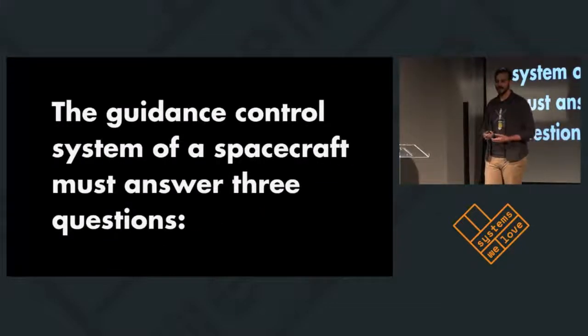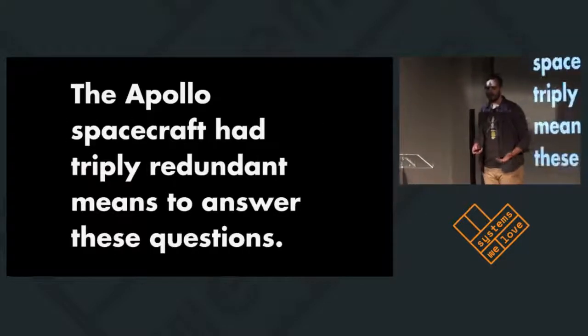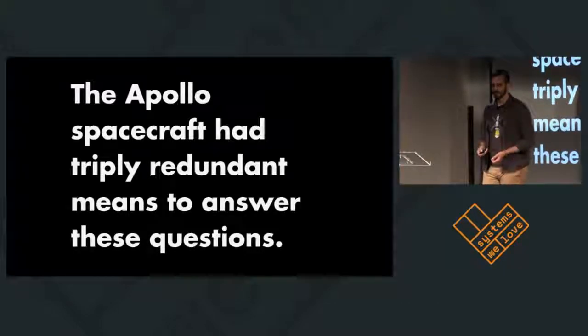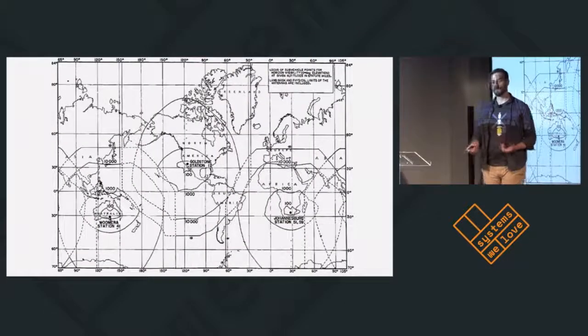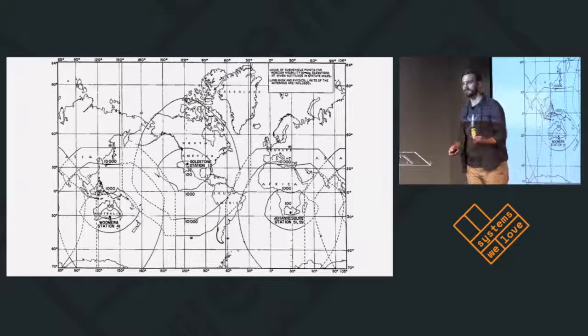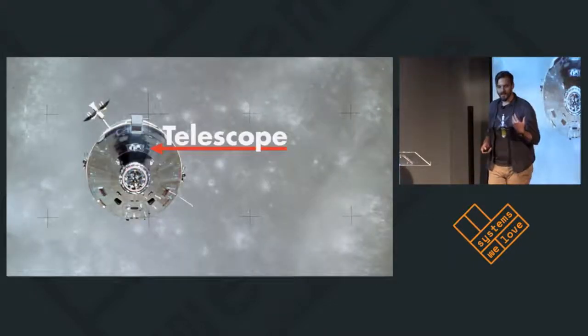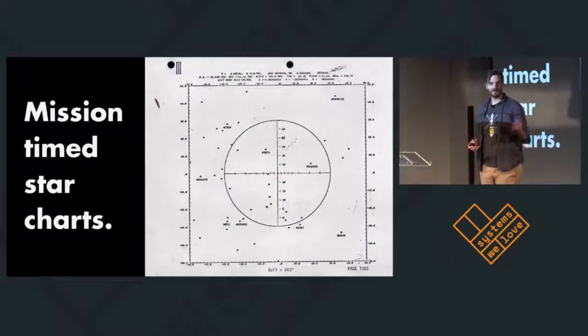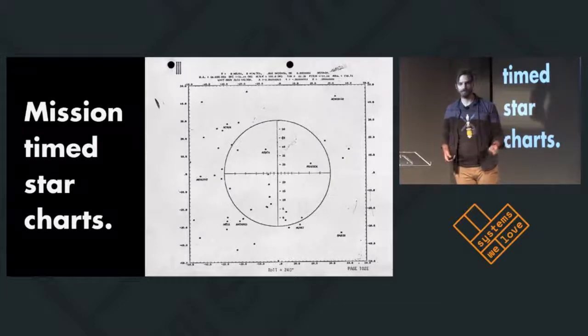The guidance control system of a spacecraft must be able to answer three primary questions: Which way is up? Where am I? And where am I going? The Apollo spacecraft had triply redundant means to answer these questions. The first was the Deep Space Network, which was a globally distributed array of long-range radar stations that would bounce radar off the spacecraft and let the spacecraft know where it was in universal space. The second was celestial navigation. So the onboard crew would use a telescope and sextant built into the craft, and using mission-timed star charts would measure the angles between well-known stars and be able to triangulate their position in universal space.